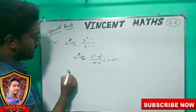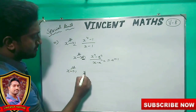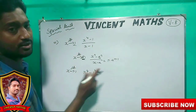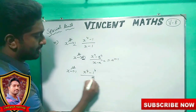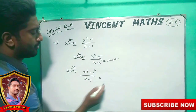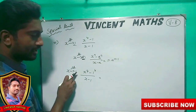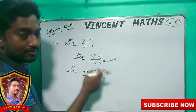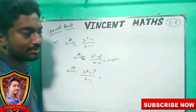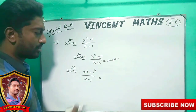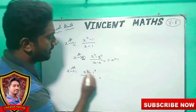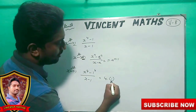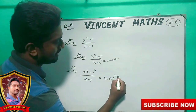Limit x goes to 1: x power 4 minus 1 power 4 — anything power 1 is 1 — divided by x minus 1. Now we have to do this value: 1 is 1. So, the value is 4.